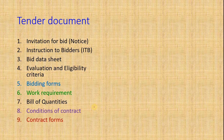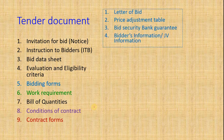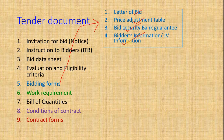Contract Forms and Bidder Forms contain the following four documents: Letter of Bid, Price Adjustment Table, Bid Security Guarantee, and Bidder's Information or JV Information. JV means joint venture — you can apply as an individual or in a joint venture. The number of partners in the joint venture, which can be a maximum of up to three, is mentioned in the Bid Data Sheet.